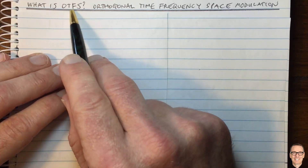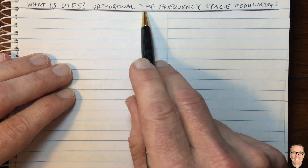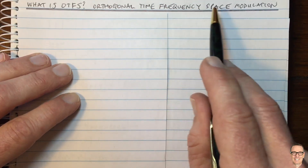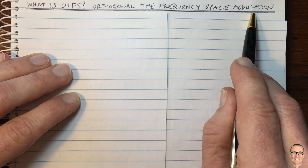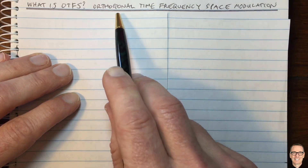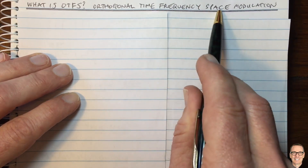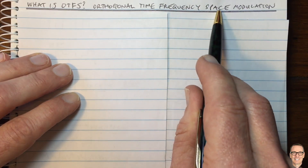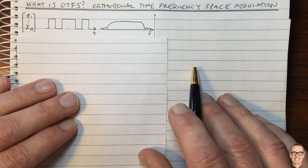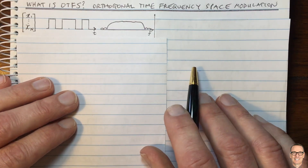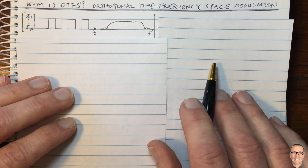What is OTFS — Orthogonal Time Frequency Space Modulation? And is it really orthogonal in these three dimensions? Well, let's start by thinking about some modulation schemes that we are familiar with.